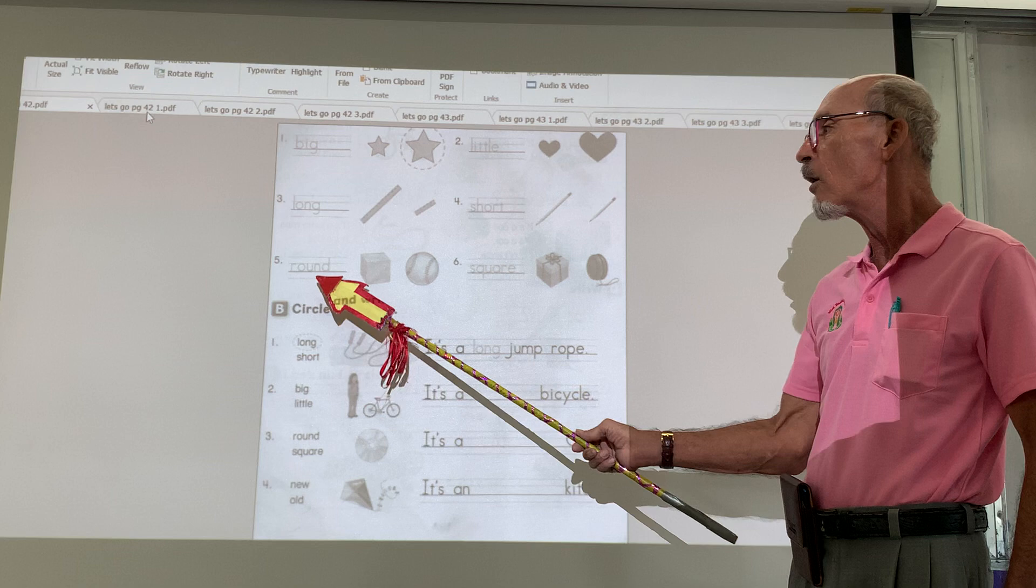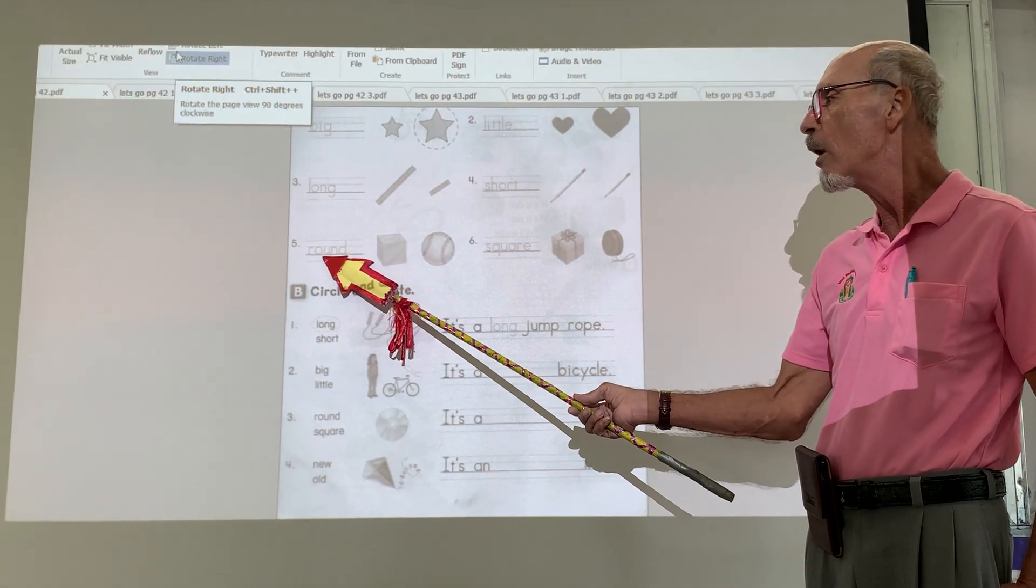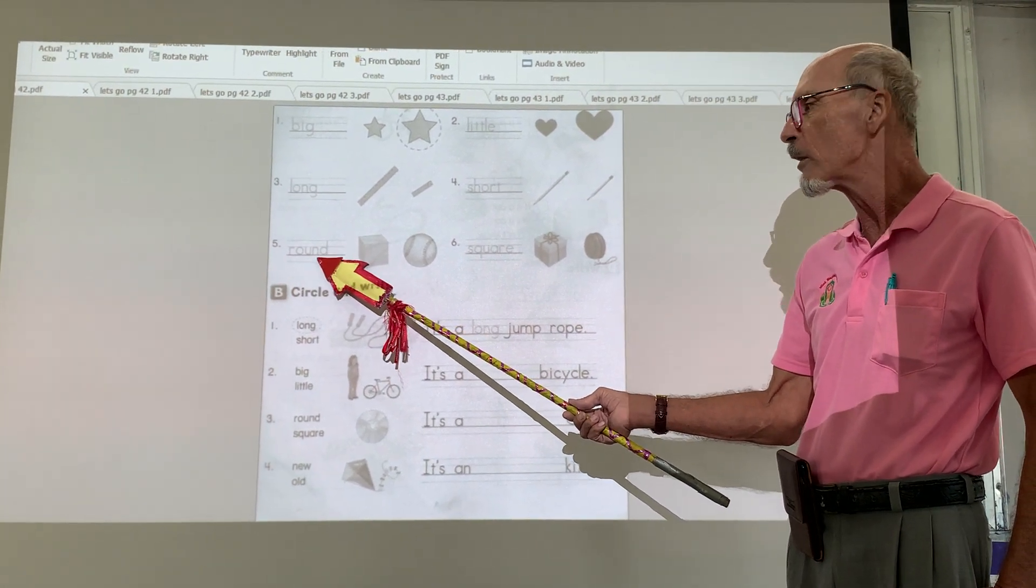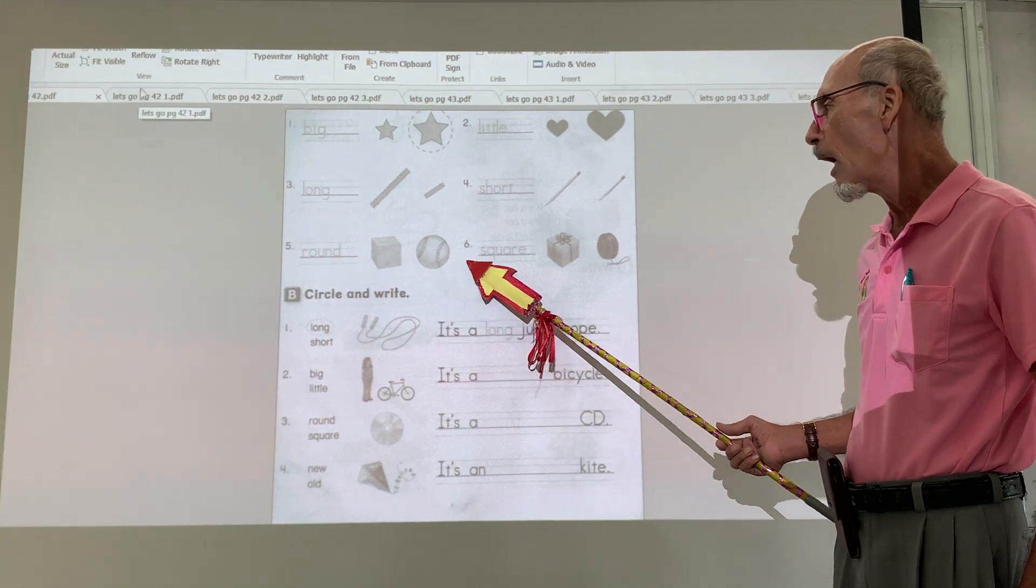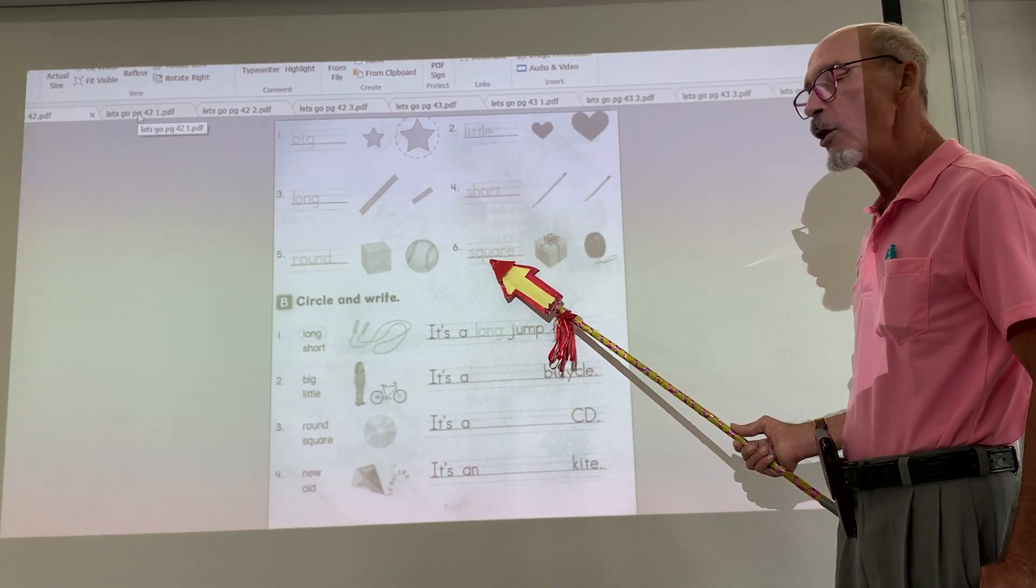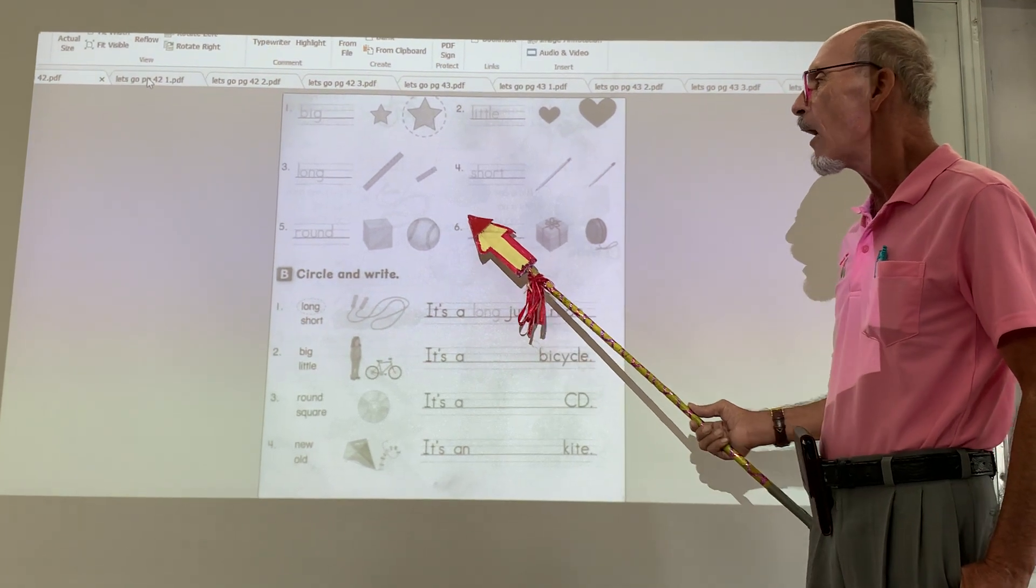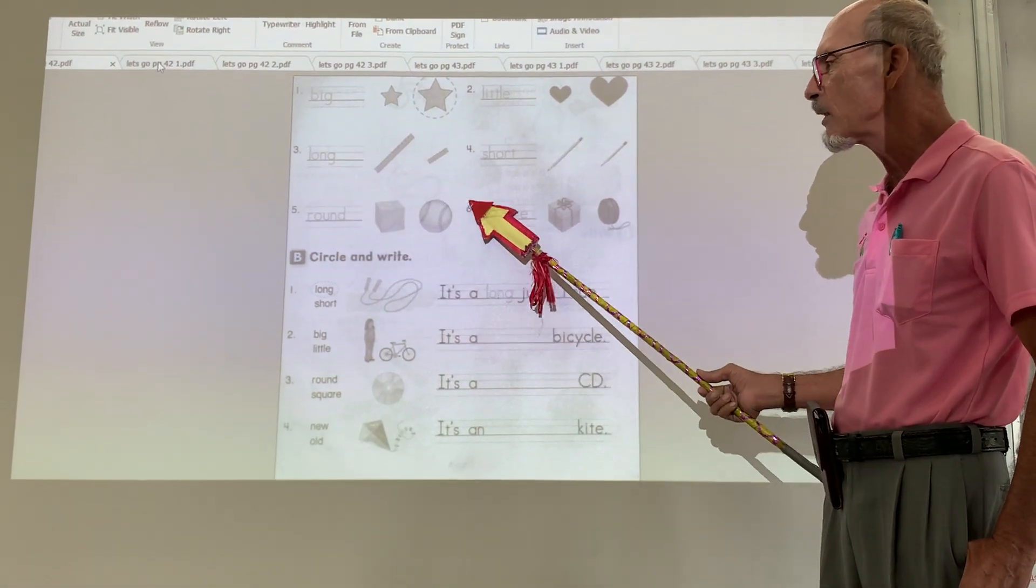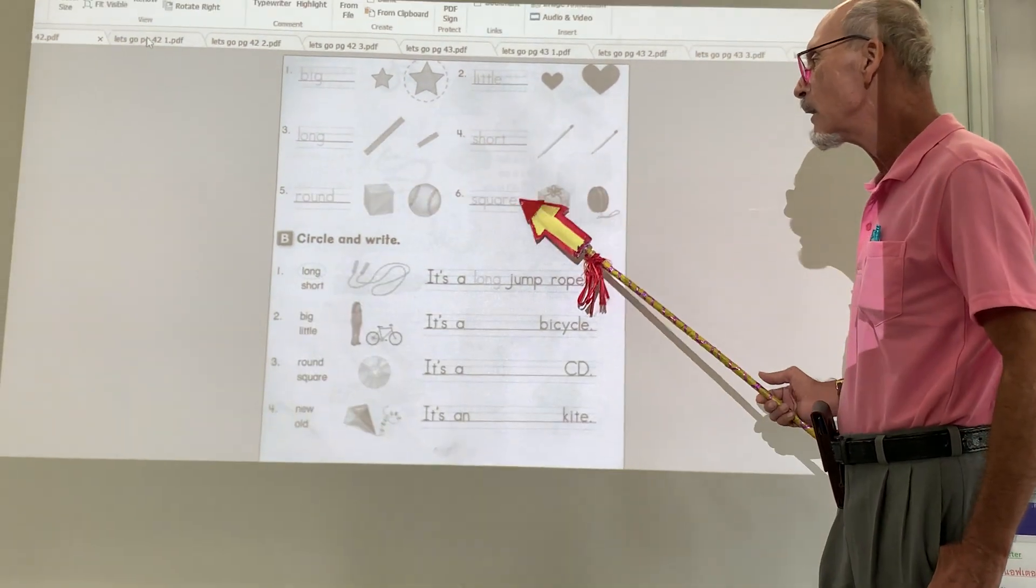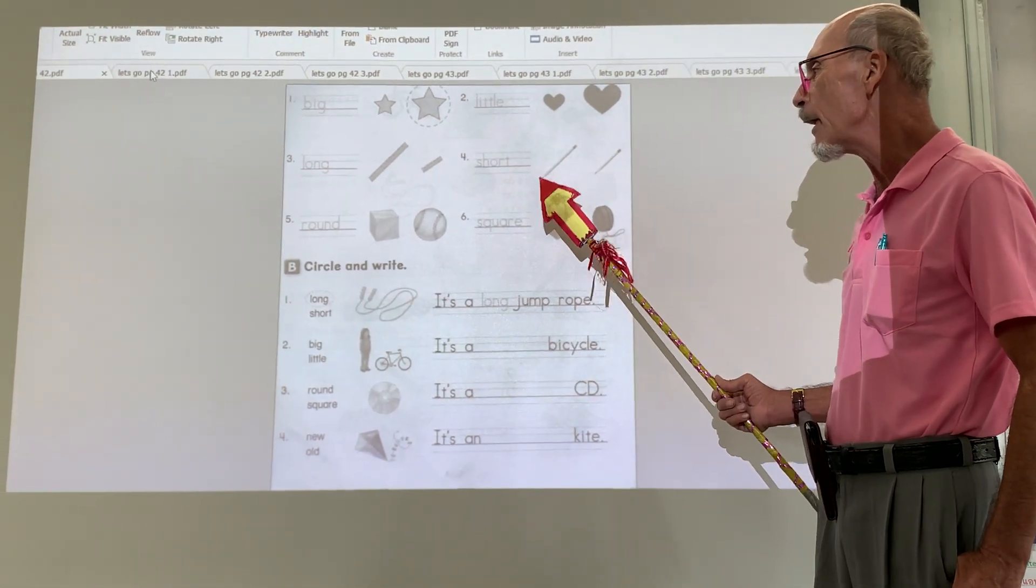Round. R-O-U-N-D. Round. Okay? Opposite of round is square. S-Q-U-A-R-E. Now, looking at the picture, which one of these is round and which one of these is square? I'm going to let you do that on your own. I want to see if you get it right.